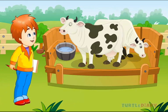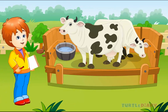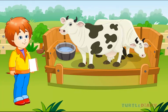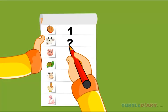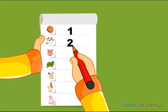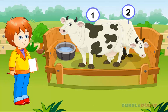Can you see some cows in a barn? Count them with me. One, two — there are two cows in a barn. Now let's see the next animal.